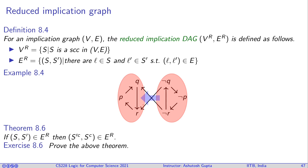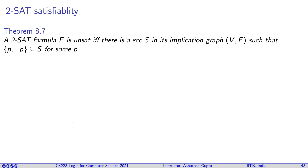Another theorem: if SCC S has an edge to SCC S', then the complement S'C also has an edge to SC. This is the same idea as the path-negation property lifted to the SCC level. Now let us state the final theorem.